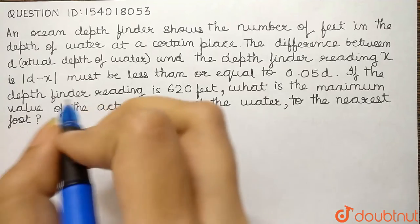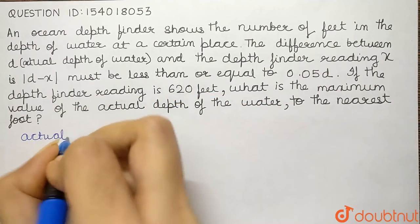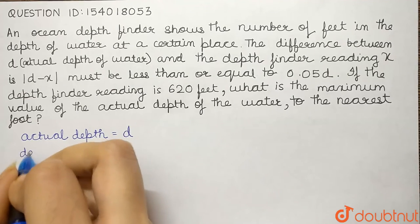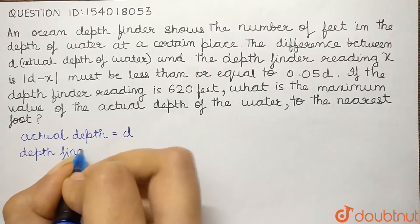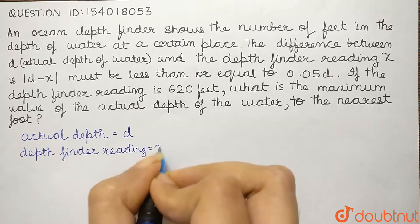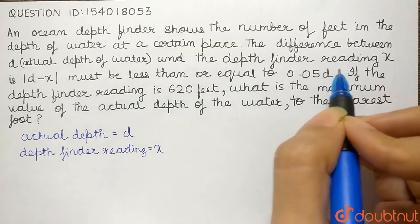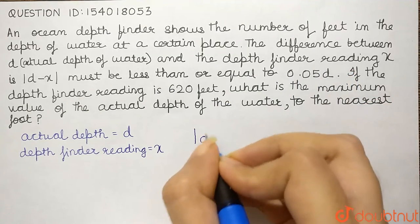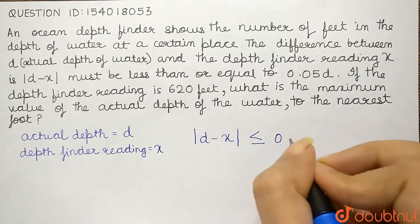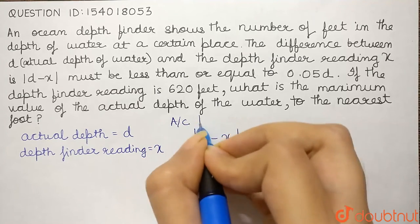In the following question, it has been given that the actual depth of water is D and the depth finder reading is X. And we have been given a relationship between D and X such that modulus of D minus X must be less than or equal to 0.05D. This has been given in the question, this relationship.